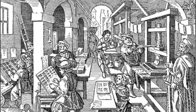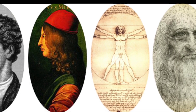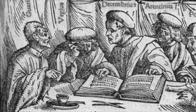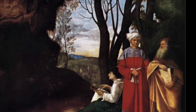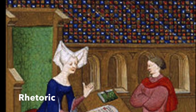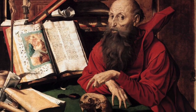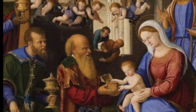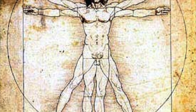During the Renaissance, education became more important. Many scholars believed that education could be fully expressed only if people used their talents and abilities. As a result, classical studies were developed. The subjects included rhetoric, grammar, poetry, history, Latin, and Greek. These subjects came to be known as humanities, and the movement they inspired is known as humanism.